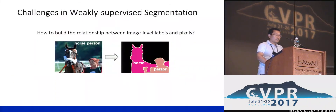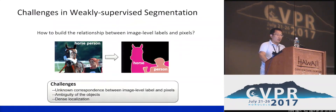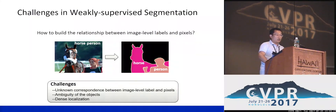For this scheme, the key problem is how to build the relationship between image-level labels and pixels. To address this problem, the main challenges include unknown correspondence between image-level labels and the pixels, ambiguity of objects, and how to obtain dense localizations.